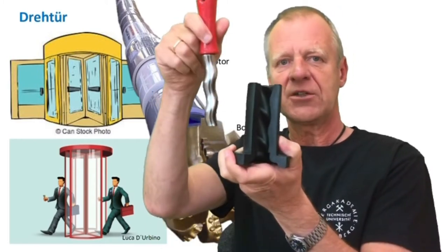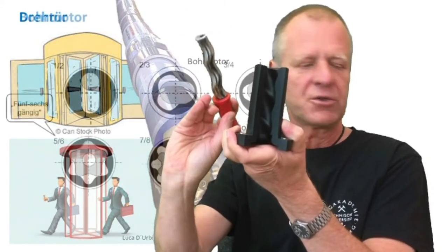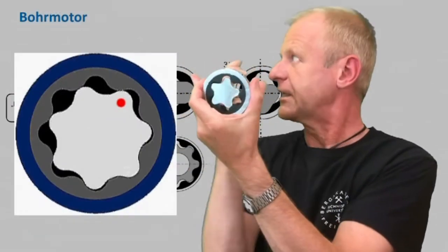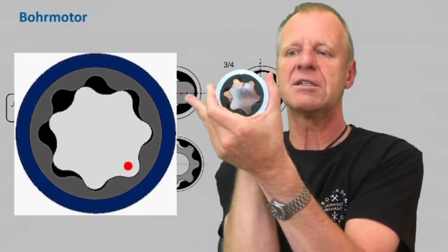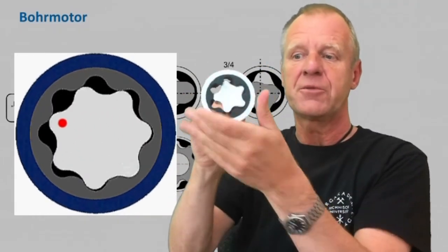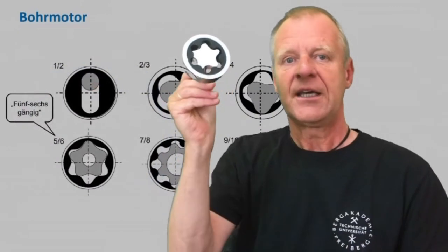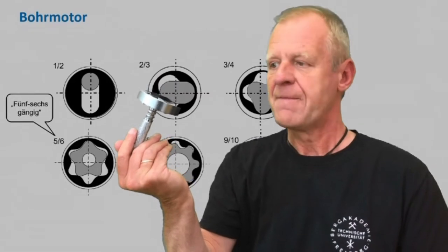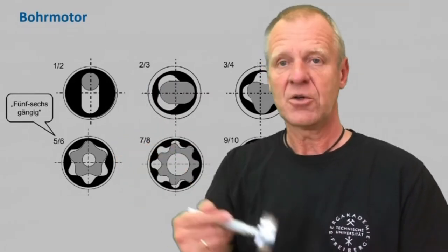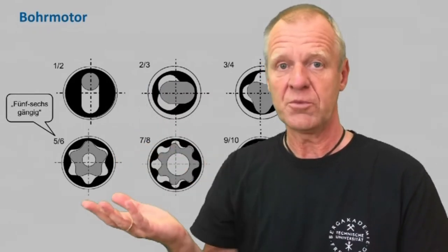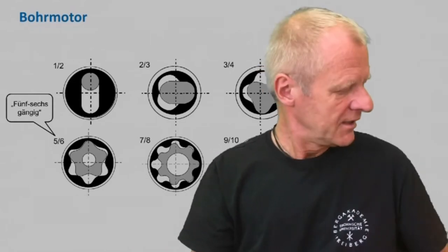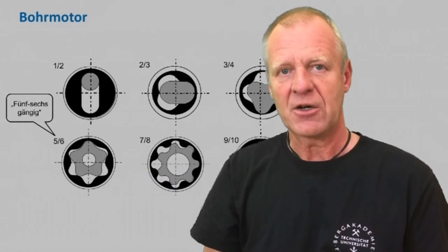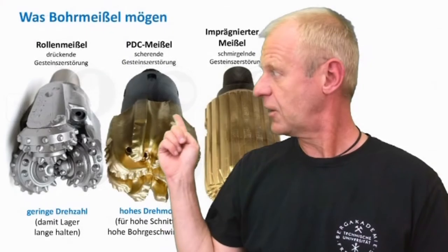The great thing about a downhole motor is that you don't just have one rotor and stator shape — you can actually use different combinations and different designs of stator and rotor to achieve different characteristics. Depending on the shape, you can build high-speed motors with low torque, or slow-speed motors with high torque, or anything in between. Everything is possible. Therefore, you can select the motor to meet the exact requirements for a specific drill bit.